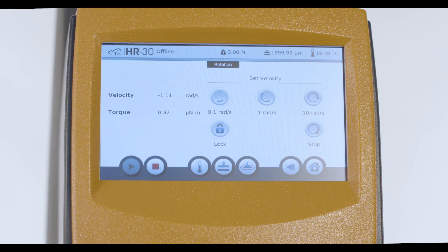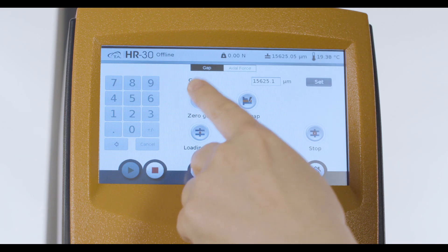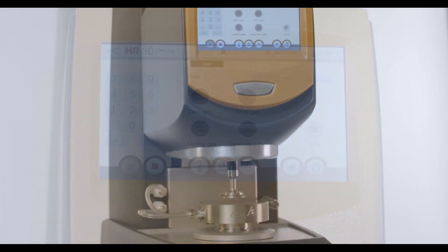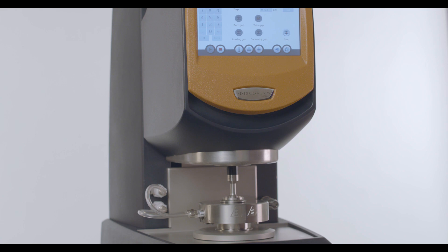From the instrument touch screen, press this button to access the geometry gap setting page. Zero the geometry gap at your measurement temperature. Then, go to the sample loading gap.